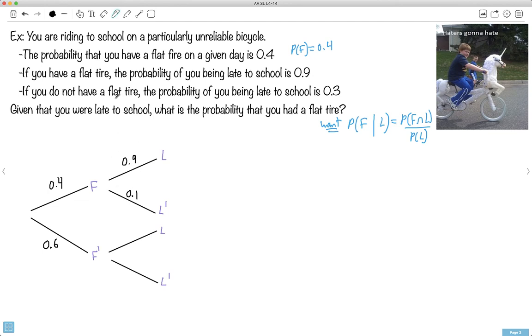How about this? If you didn't have a flat tire, so you're down here, the probability of you being late is 0.3. Ah, so 0.3 goes up here for late. What goes down here then? 0.7. Do you see I've got them all figured out?